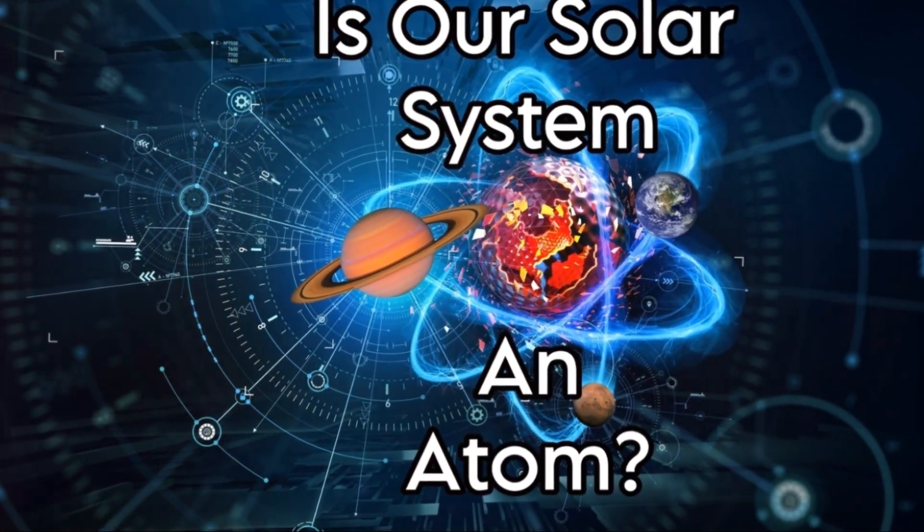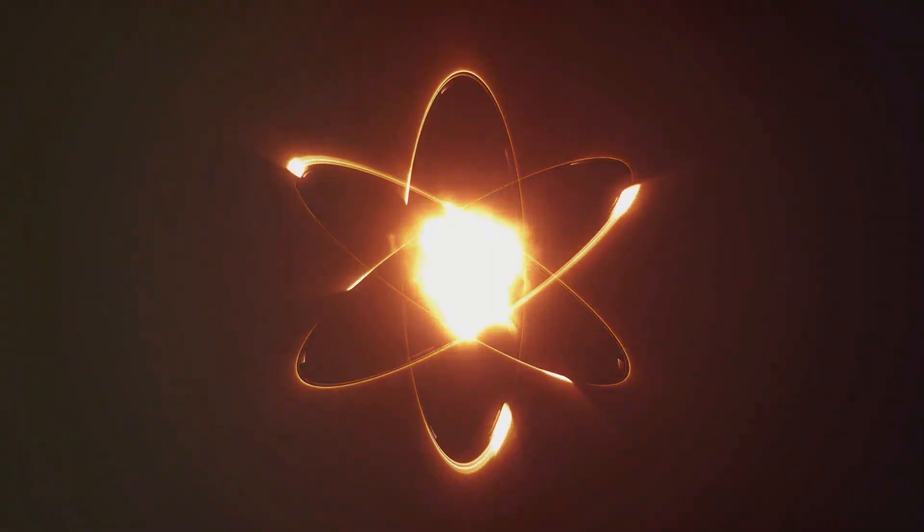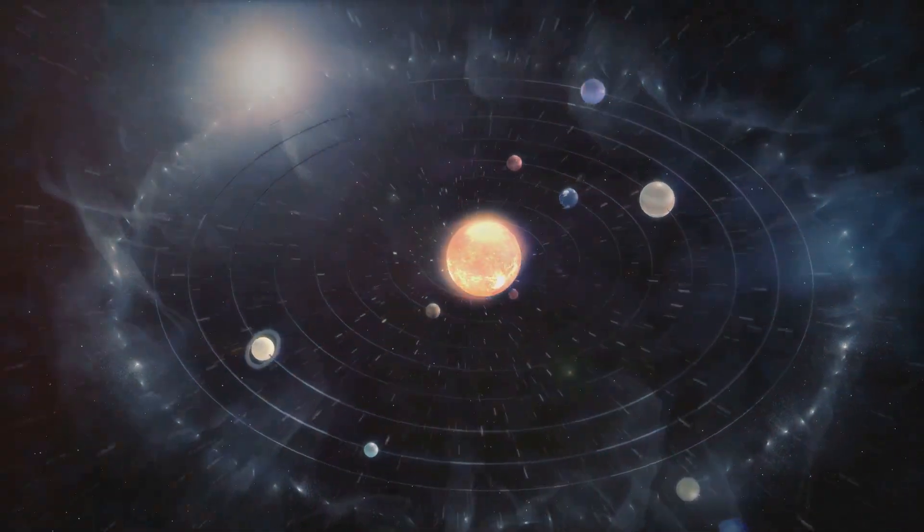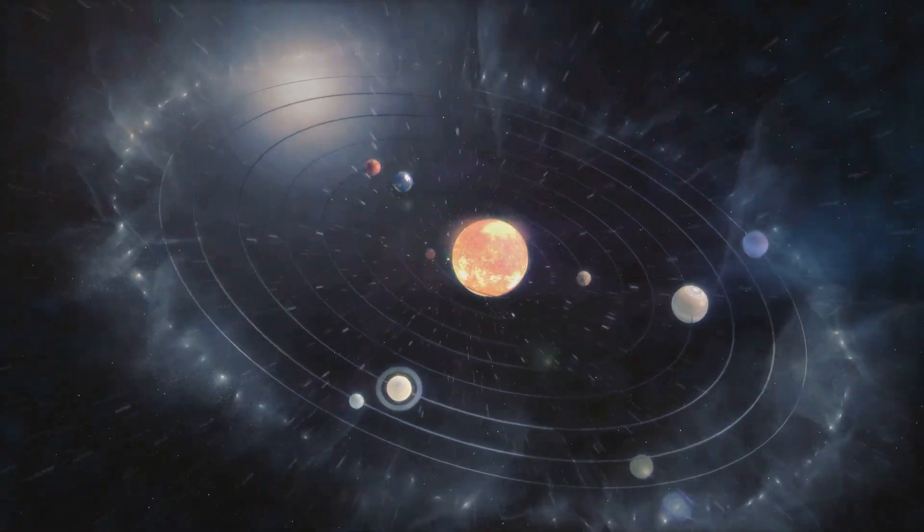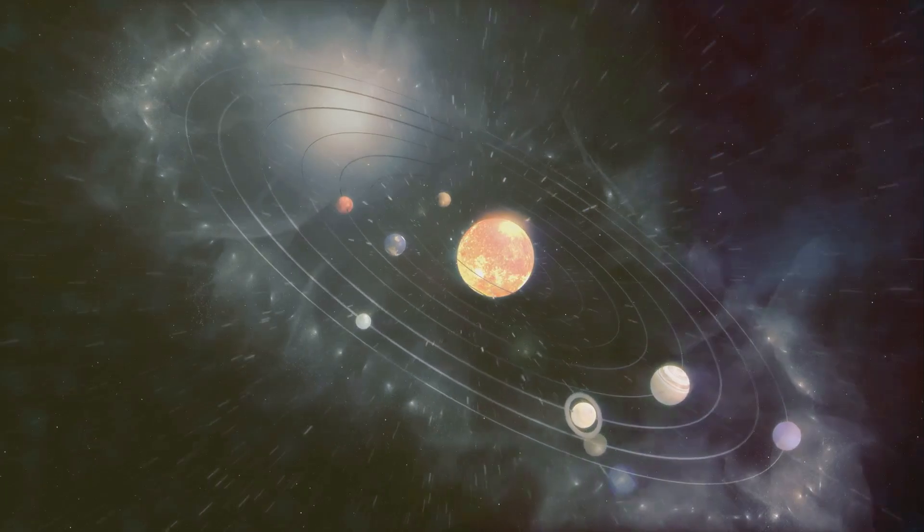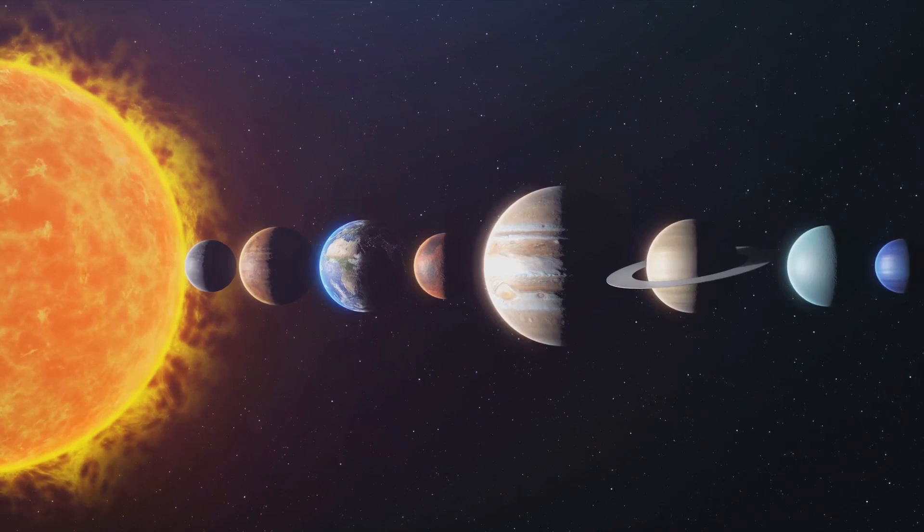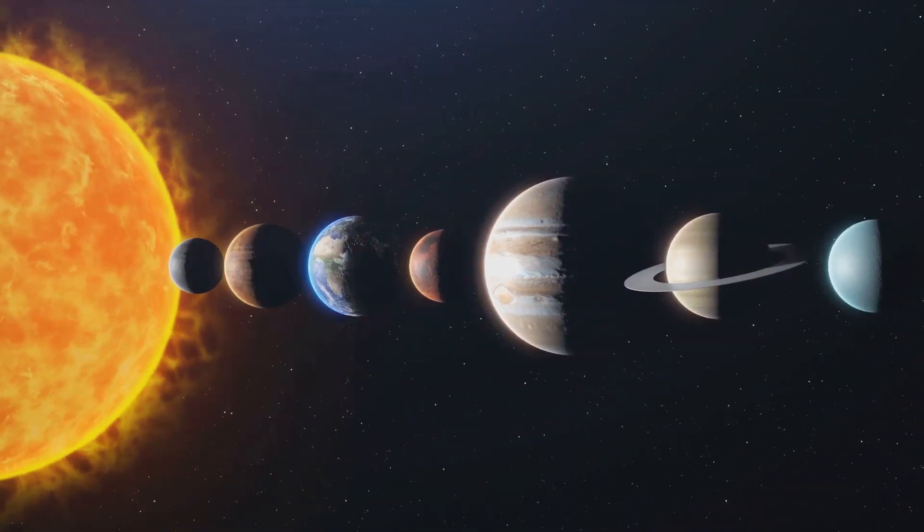Have you ever contemplated the nature of our solar system and its uncanny resemblance to an atom? The arrangement of celestial bodies with the sun, our very own nucleus at the center, and planets akin to electrons orbiting around it. But let's go deeper down this rabbit hole. What if all the planets in our solar system are simply Earth, but at different stages of evolution?